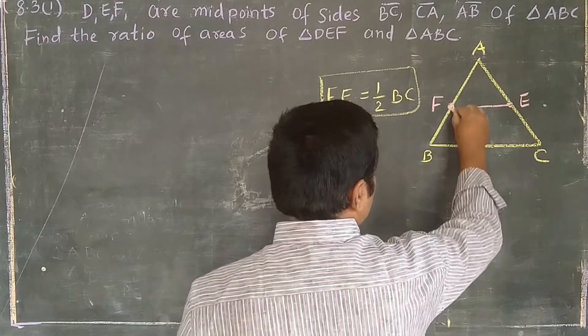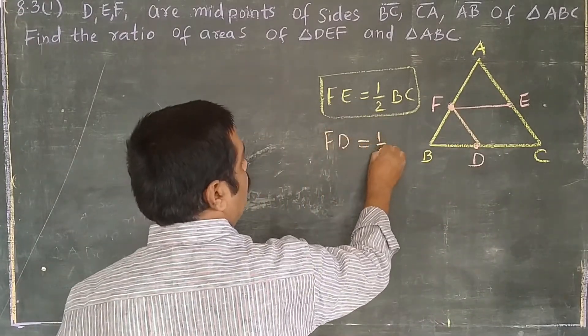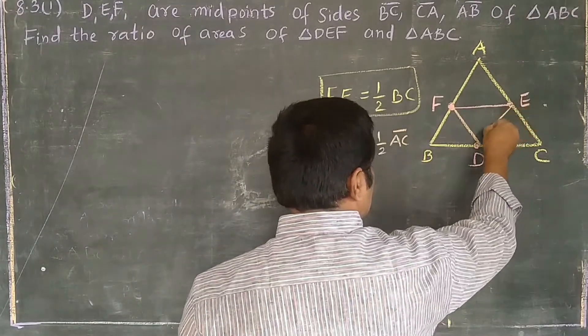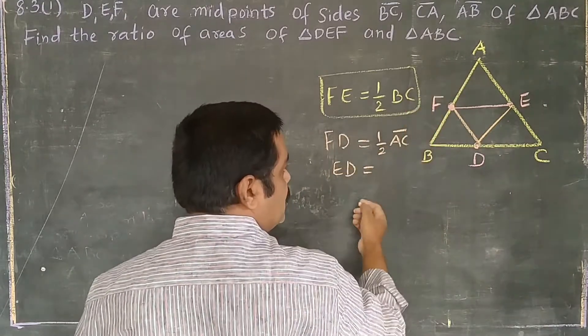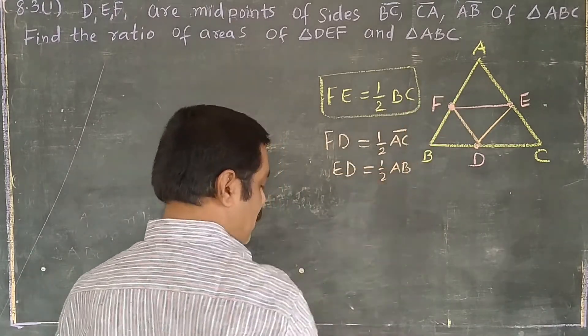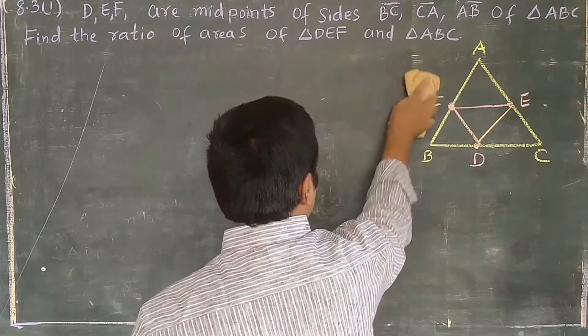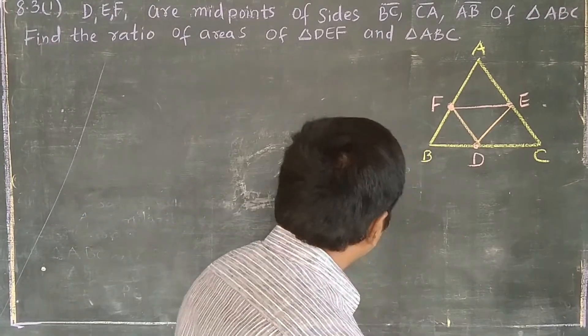And in the same way, when I join FD, that FD also is half of BC. We know already if we join ED, that ED is parallel to AB also and half of AB also. So remember these points and go for the problem. That is a simple question. Easily we can find out.